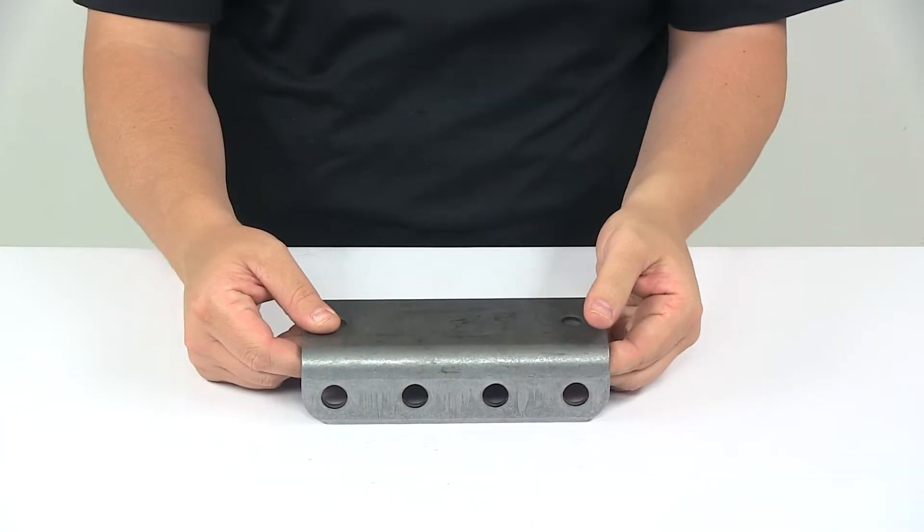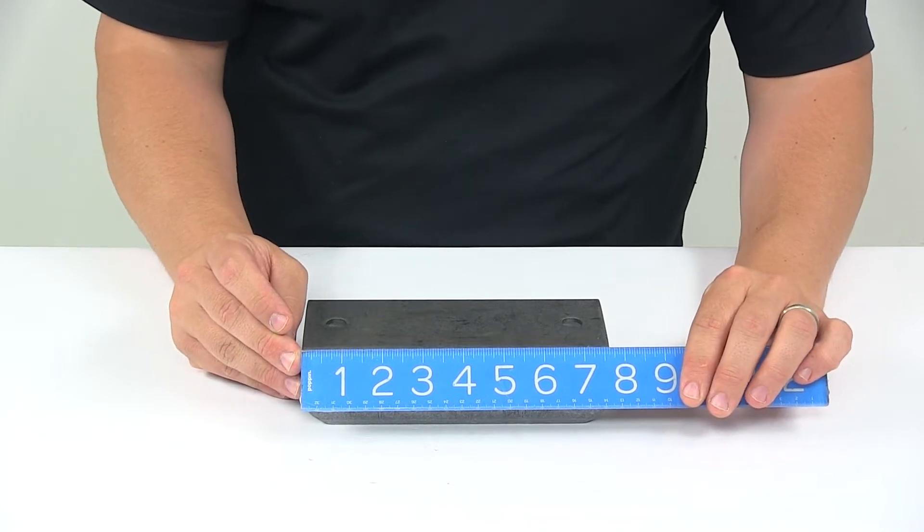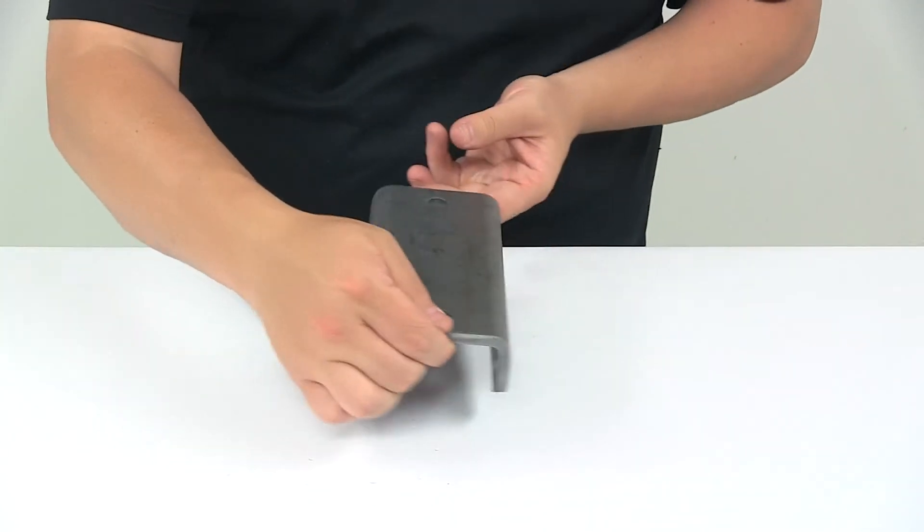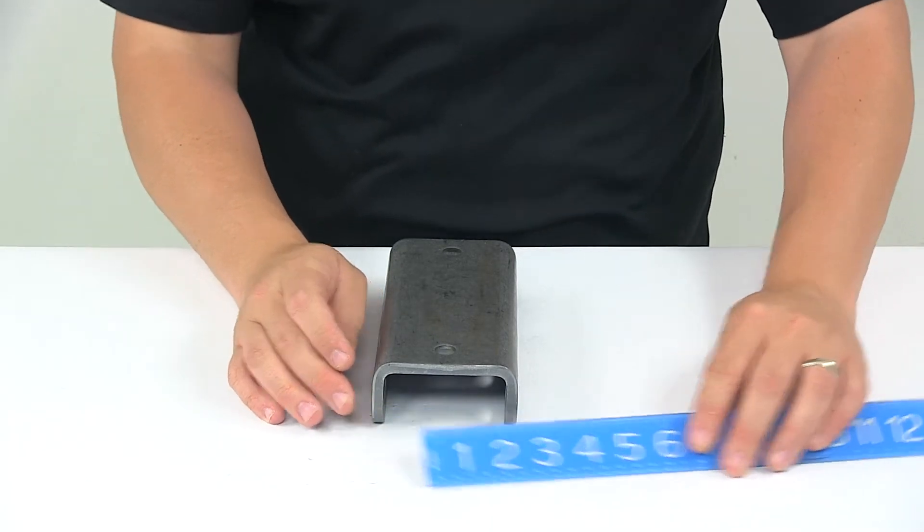We're going to take a look at some of the measurements. Starting with the overall height, top to bottom, that measures about seven and five eighths. The overall width, edge to edge, about three and five eighths.